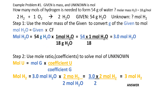Let us have this example problem wherein the given is mass and the unknown is mole. How many moles of hydrogen is needed to form 54 grams of H₂O? The molar mass of H₂O is 18 grams per mole. The balanced equation is: 2 moles of hydrogen plus 1 mole of oxygen forms 2 moles of H₂O.